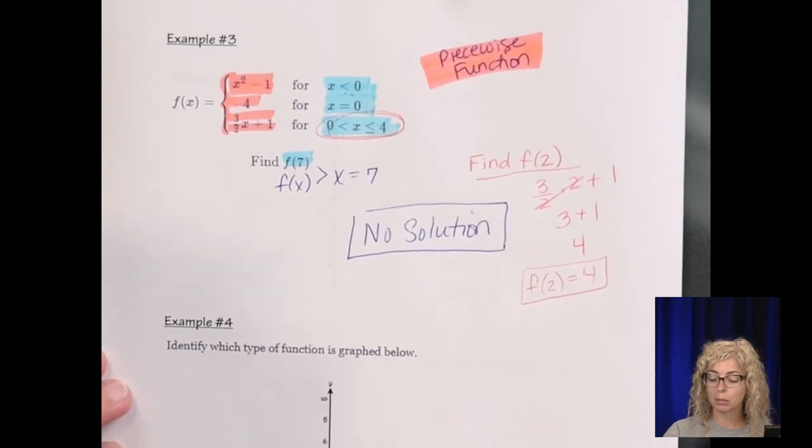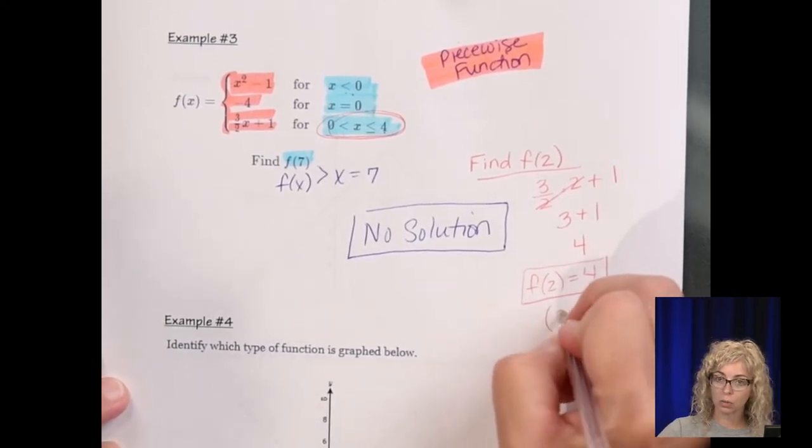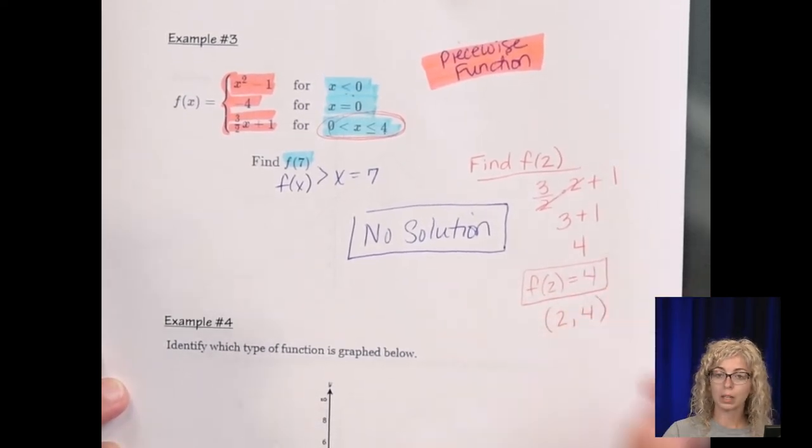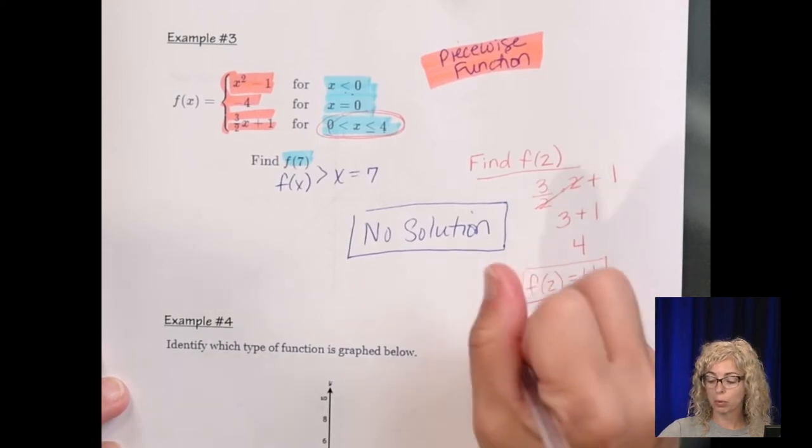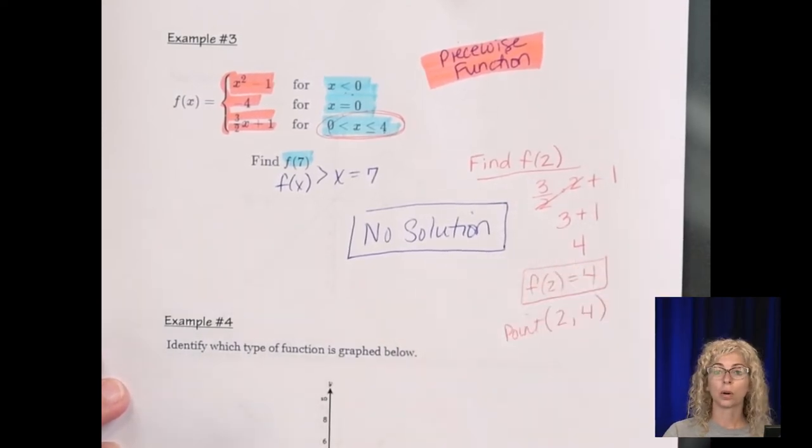Now as a point, because remember it's f of x, so the x would be 2 and the y would be 4. That would be the point 2, 4.